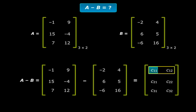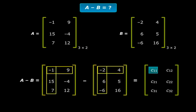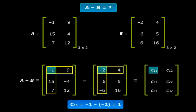Look at C11. First row, first column. Now look at matrices A and B. Let me highlight the elements in the first row and the first column there. Now in order to find the value of C11, we just need to subtract these elements. So what is C11? That is minus 1 minus minus 2.